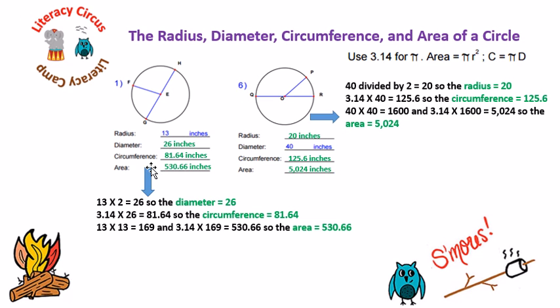To get our circumference, we multiply 3.14 times 26 equals 81.64. So the circumference is 81.64 because we use this formula.